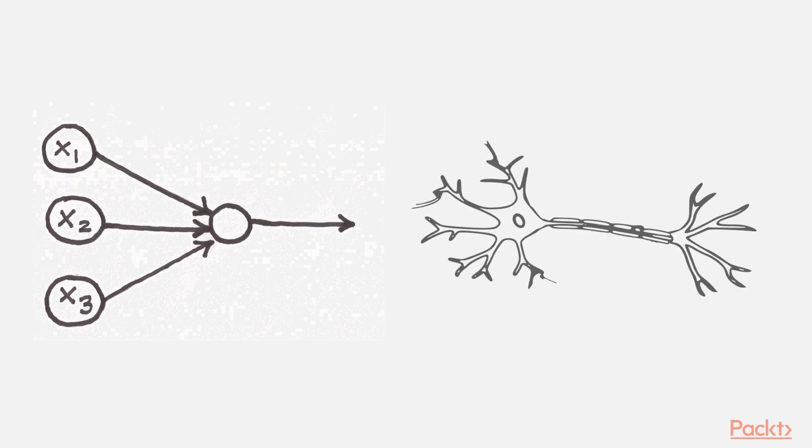The circle in the centre is a computational unit, or the neuron's body. The edges connecting the input units to the computational unit are analogous to dendrites. Each edge is associated with a parameter, or weight. The edge directed away from the computational unit returns the output, and can be thought of as the axon.